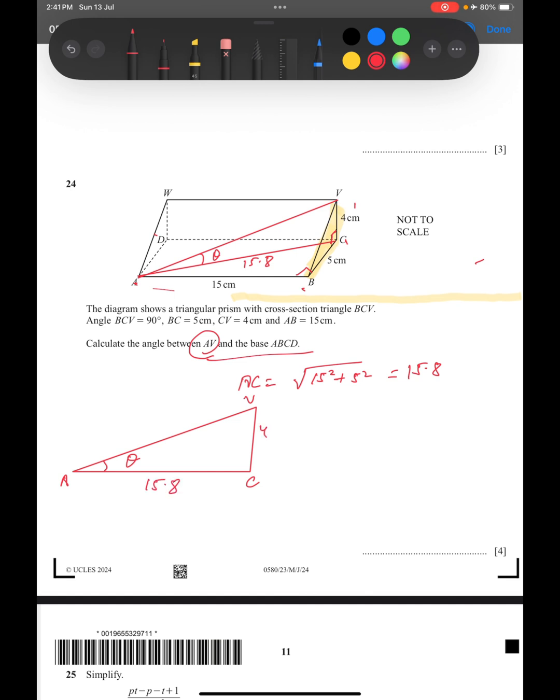We have to find this angle theta. This is 15.8 and this is 4 centimeters. So we see that 4 is opposite and 15.8 is the adjacent. So tan theta will be opposite divided by adjacent, so 4 upon 15.8.